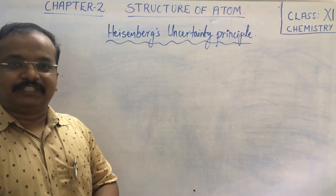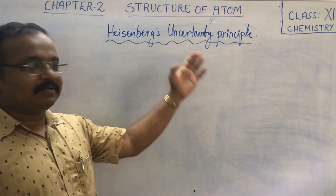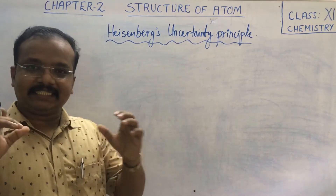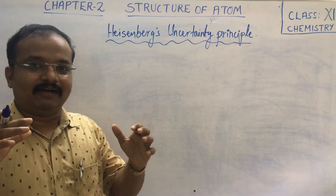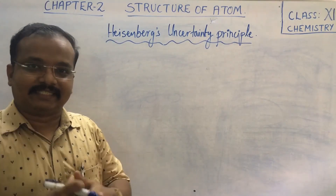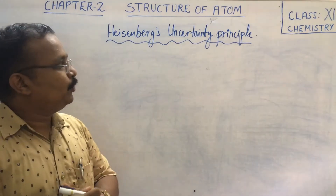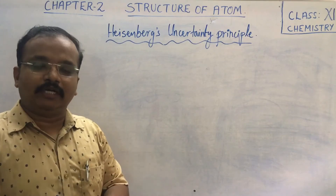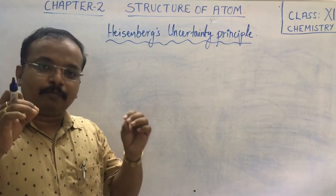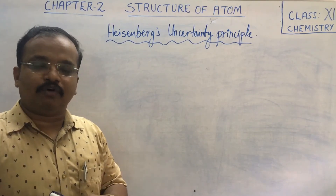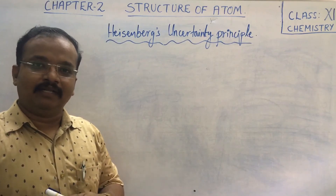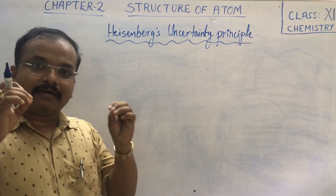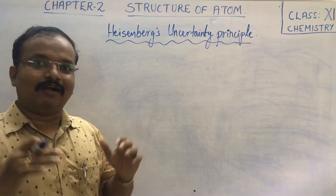Next, we shall study Heisenberg's Uncertainty Principle. The word 'uncertainty' means something which is not certain. According to Heisenberg, it is quite impossible to determine the position and momentum of a moving microscopic particle, such as an electron, with absolute accuracy.